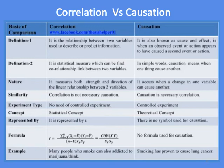Definition 2: Correlation is a statistical measure which can define a co-relationship link between two variables, while in simple words, causation means when one thing causes another.